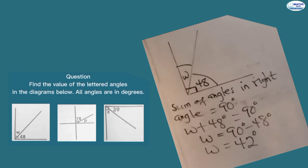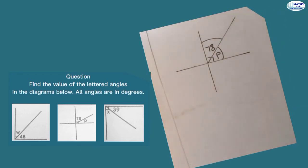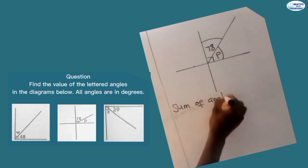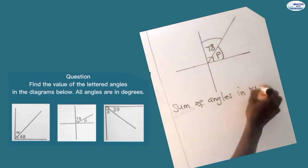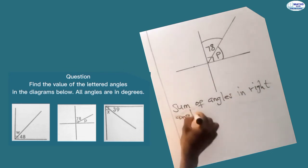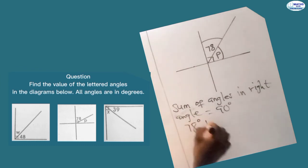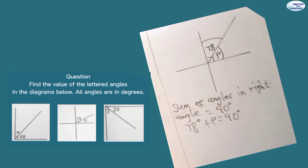Now let's move on to the next question. On this side, we have 78 degrees and then P, and this is a right angle. These two angles are formed within this right angle. To find the value of P, we state that the sum of angles in a right angle is equal to 90 degrees. We add the angles: 78 degrees plus P, equated to 90 degrees.